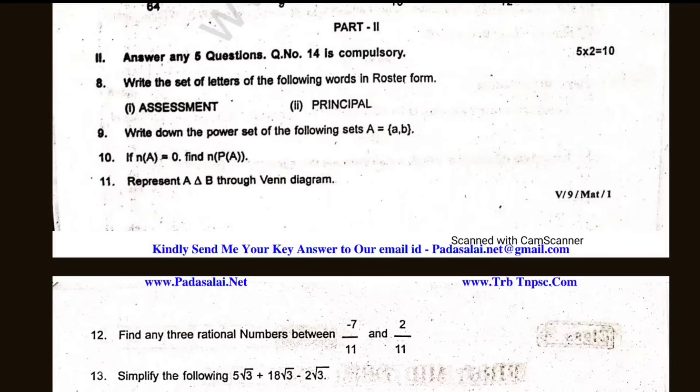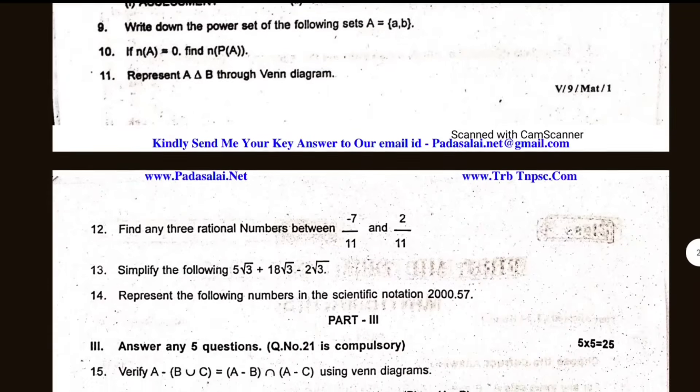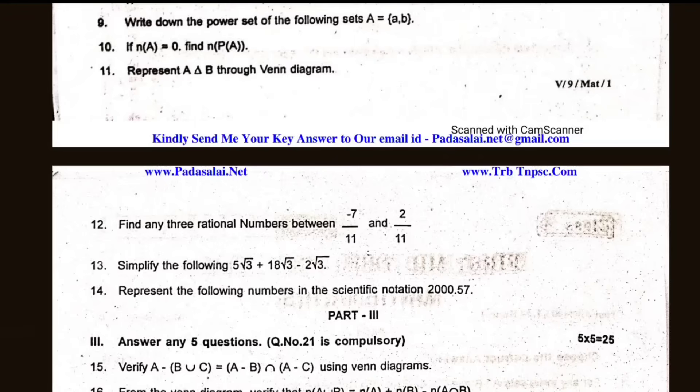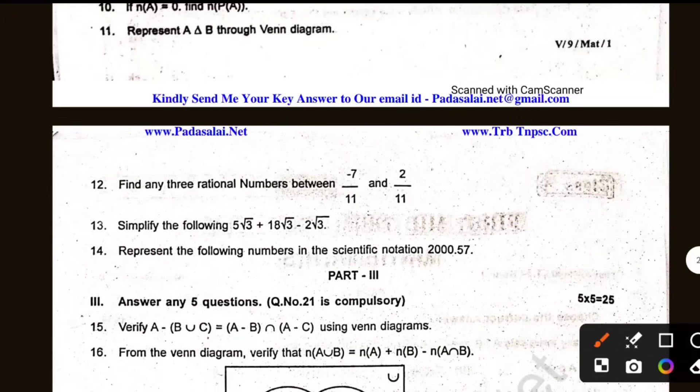Okay, let's see. Write the set of letters of the following words in roster form. Write down the power set of the following sets A is equal to A, B. Questions 10, 11, 12, 13, 14: Find any 3 rational numbers between minus 11 divided by 11 and 2 divided by 11. Simplify the following, and 14 is compulsory.